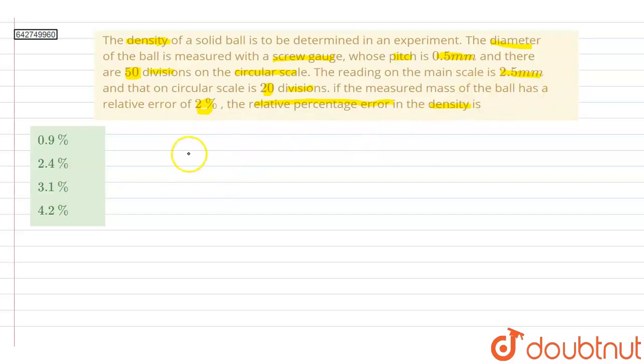So let us write what we are given. The pitch of the screw gauge P is 0.5 mm, and the circular divisions is 50. The main scale reading MSR is equal to 2.5 mm, and the circular scale divisions CSD is 20.